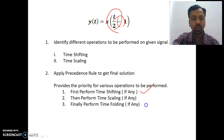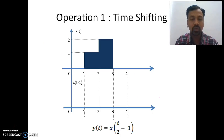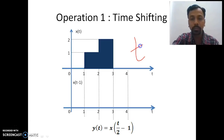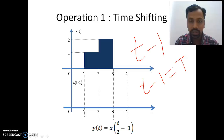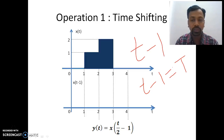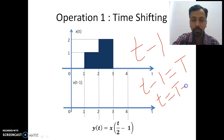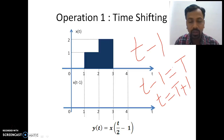Now let's consider the first operation, which is time shifting. Here I have a time shifting of t minus 1. I will assign a dummy variable where t minus 1 equals capital T, where small t is the time instant of the resultant and capital T is the time instant of the input signal. From this equation, small t equals capital T plus 1.